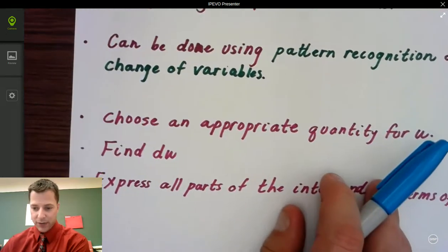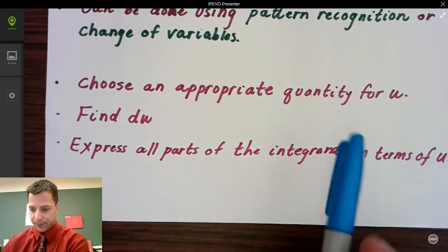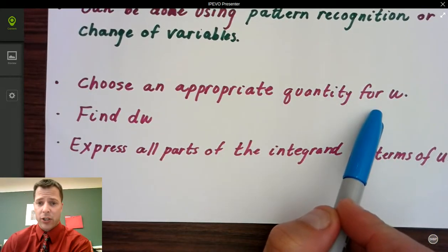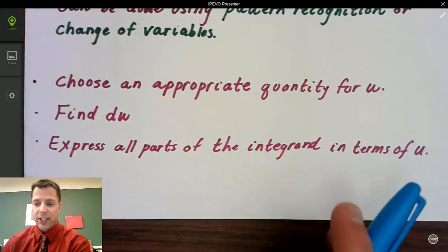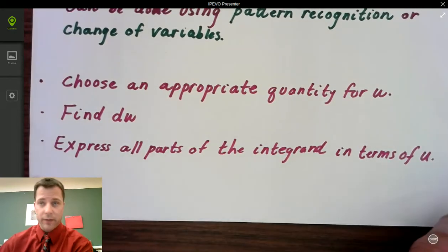The three-part process for me is pretty simple. I've got to pick an appropriate u. If you pick the wrong u, you won't be able to integrate. You've got to find the du, the derivative of your u-value, and then you express your integrand in terms of u. It's all got to be in one variable.